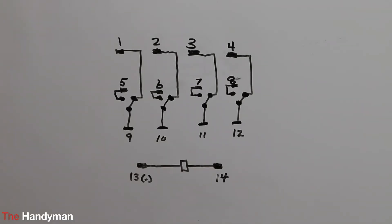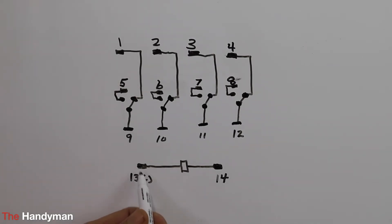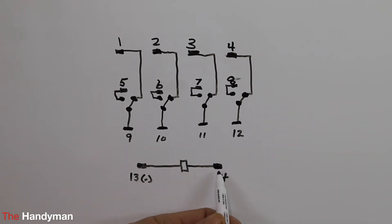So what this drawing means is, first we'll start with the coil. You have 13 with a negative sign in parentheses, and then you have 14, and this square here represents the coil.